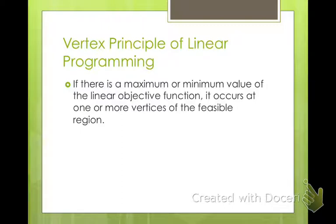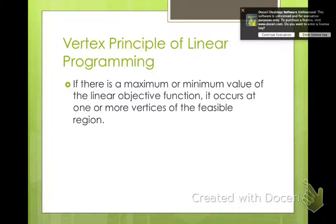So if there is a maximum or minimum value of a linear objective function, it occurs at one or more vertices of a feasible region. So what you're going to have to do is to check all the vertices and find out when you substitute in which one has the maximum value, which one has the minimum value.